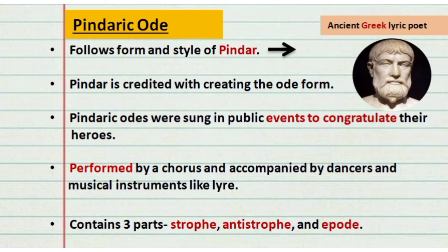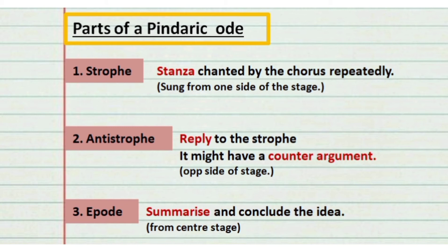There are three parts to a Pindaric Ode: the strophe, the antistrophe, and the epode. In the strophe, the chorus chants a stanza repeatedly. In the antistrophe, it acts like a reply — if the strophe presents an idea, the antistrophe gives a counter argument to that idea. In the epode, the chorus summarizes and concludes the whole theme of the poem. When odes were performed, the chorus sang the strophe from the left side of the stage, moved to the right for the antistrophe, and delivered the final conclusion standing at center stage.